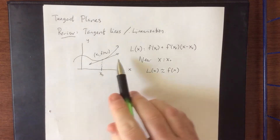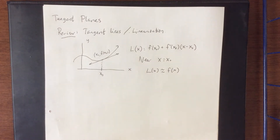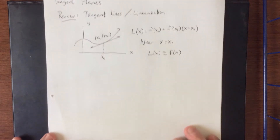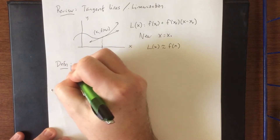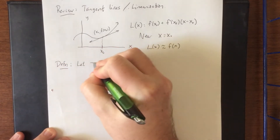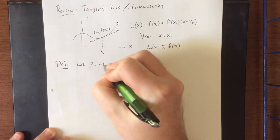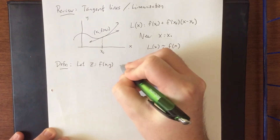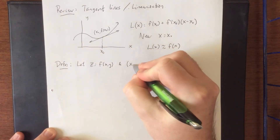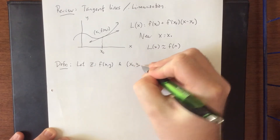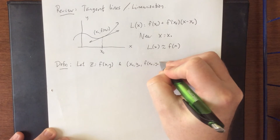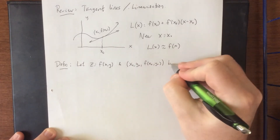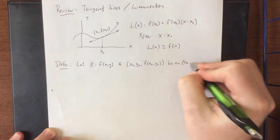That was the idea behind linearization and how to find a tangent line. What we're going to try to do is extend this to three dimensions. We'll start with the definition: let z be a function of x and y, and we'll define a point — x naught, y naught, f of x naught y naught — to be on the surface.